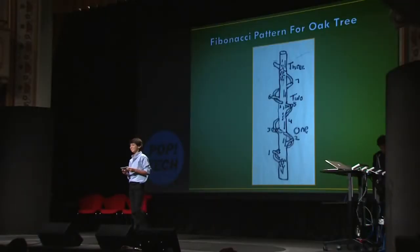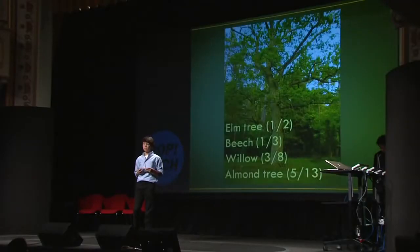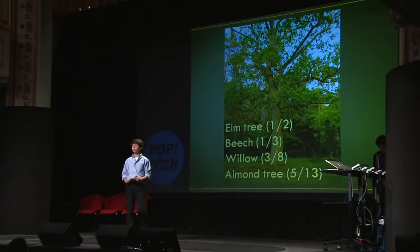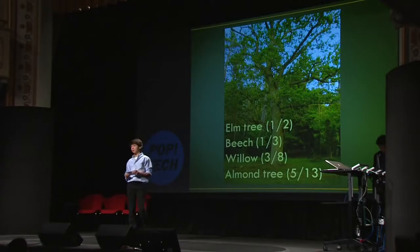Tree branches follow a Fibonacci formula. The oak tree has a Fibonacci fraction, 2 to 5, which means that five branches spiral around the trunk two times to reach the same starting point on the trunk. Different types of trees have different types of patterns — for example, the elm tree, which is 1 to 2; the beech tree, which is 1 to 3; the willow tree, which is 3 to 8; and the almond tree, which is 5 to 13.